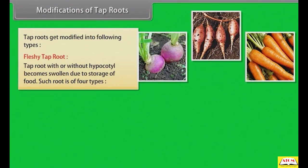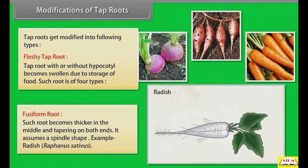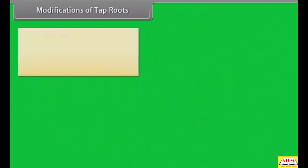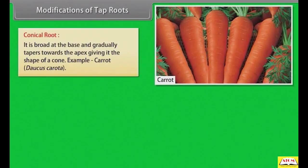Fleshy tap roots are of four types. Fusiform root: thicker in the middle and tapering on both ends, assuming a spindle shape. Example: radish (Raphanus sativus). Conical root: broad at the base and gradually tapering towards the apex, giving it the shape of a cone. Example: carrot.